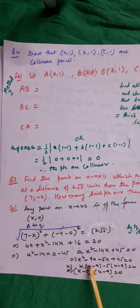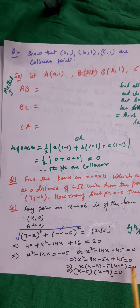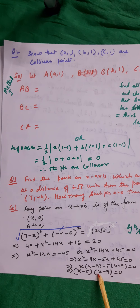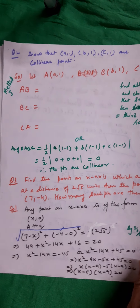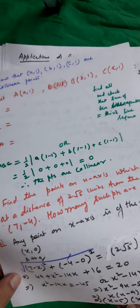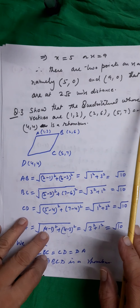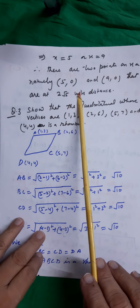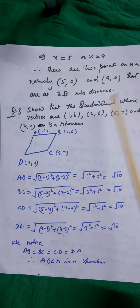Now 14 can be broken up into 9 and 5 such that their sum is 14 and product is 45. Factoring gives (x − 5)(x − 9) = 0, so x = 5 or x = 9. Therefore there are two points on the x-axis, namely (5, 0) and (9, 0), that are at 2√5 units distance.